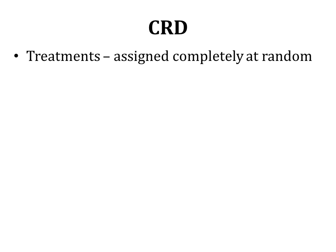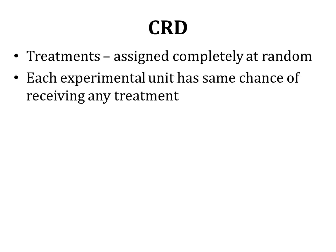CRD, as its name indicates, is the design in which treatments are assigned completely at random. Treatments are the categories of the independent variable that are applied on the experimental units to see the response of the dependent variable. In CRD, treatments are assigned completely at random to the experimental units, meaning each experimental unit has the same chance of receiving any treatment. One experimental unit receives only one treatment, but which treatment is assigned is decided completely at random.